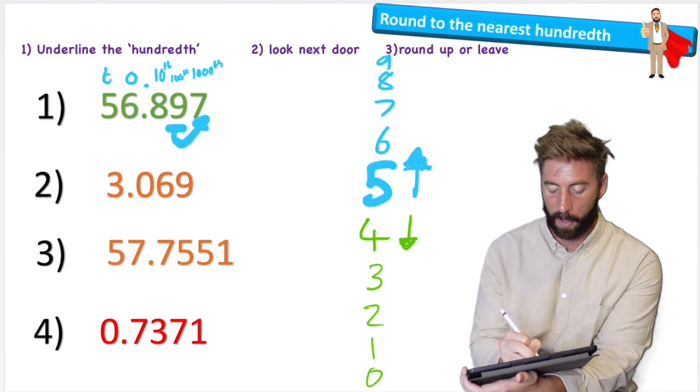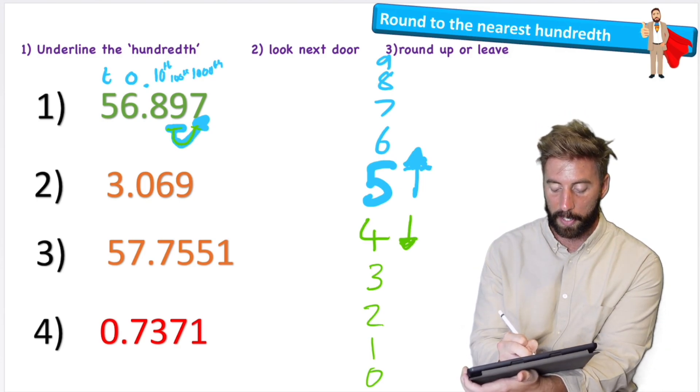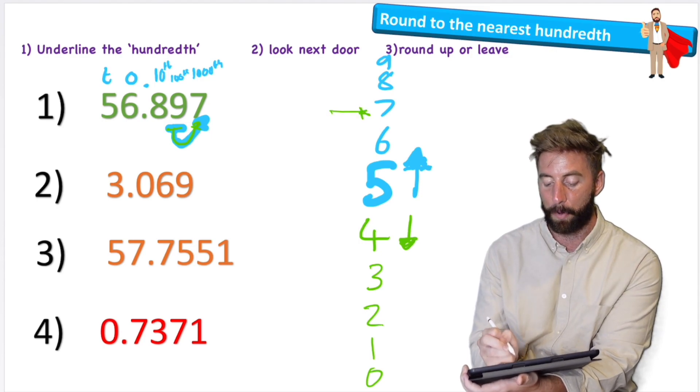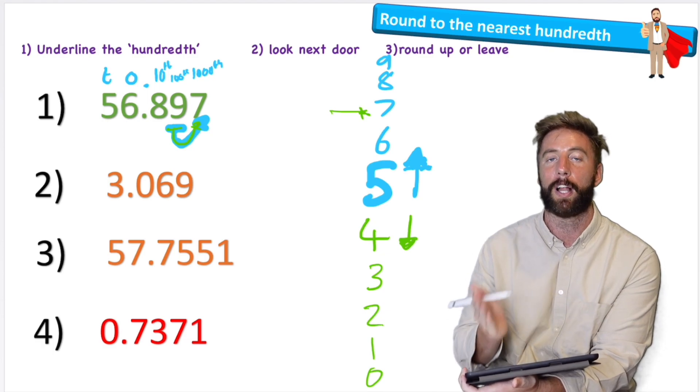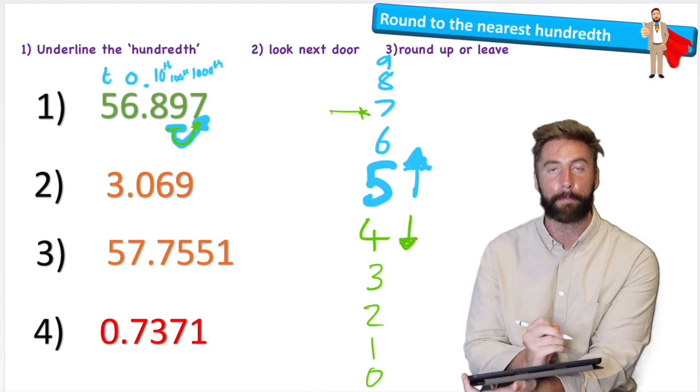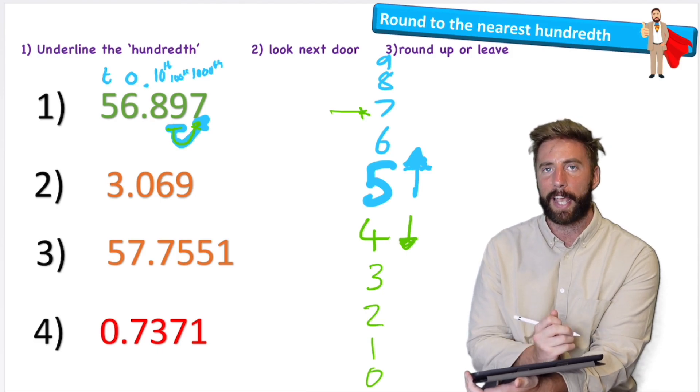So we've already underlined the nine. I can look next door and see that we have a seven. Well, where is seven? It's up here above the five, so therefore five or more let it soar. So I'm going to use the seven to let me bump my nine up, but I can't really get any further than a nine, can I?